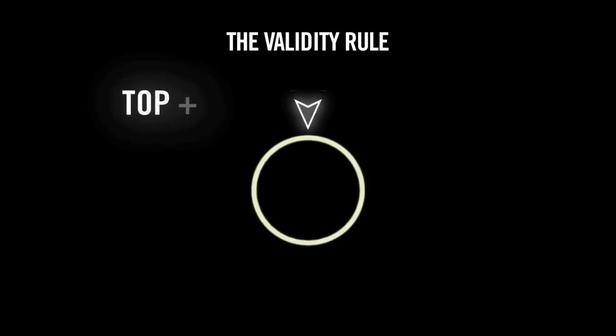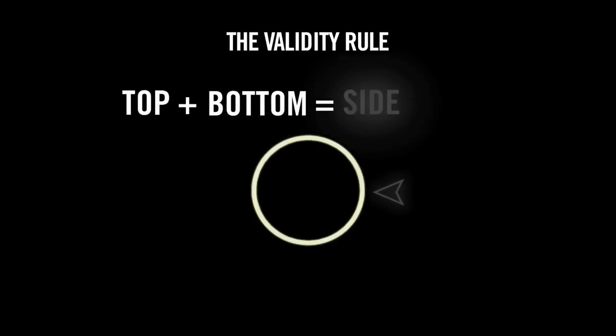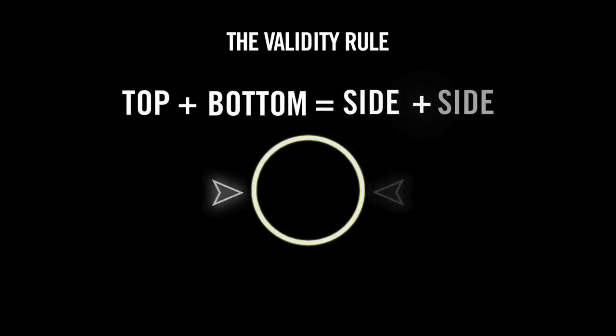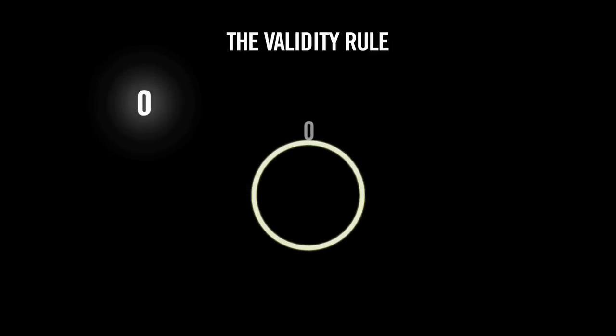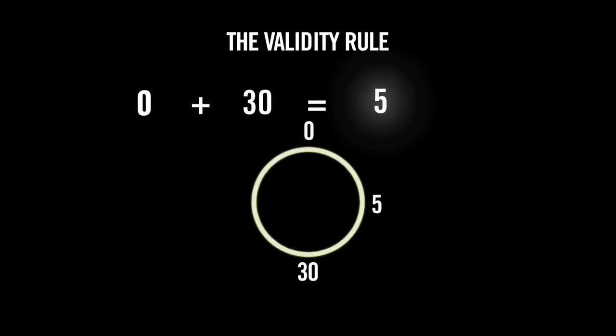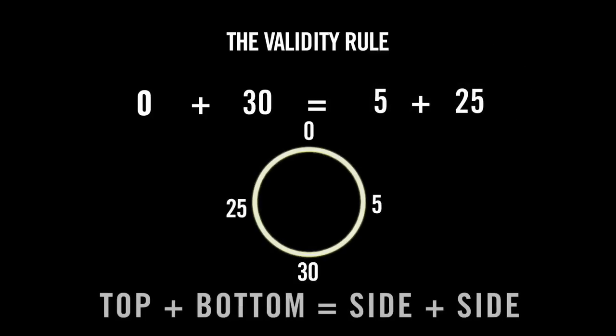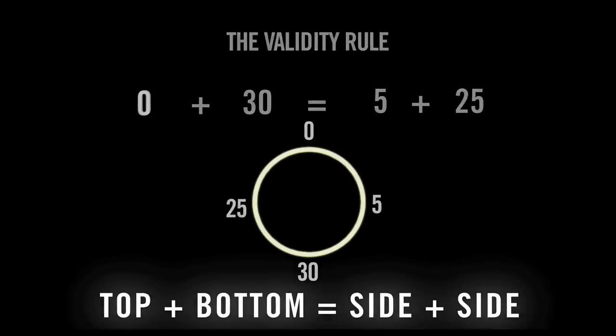The validity rule states that when we rotate the shafts, the value we acquire at the top plus the value at the bottom must equal the sum of the value at 3 o'clock and the value at 9 o'clock. So we had zero at 12 o'clock and 30 at 6 o'clock. We had five at 3 o'clock and 25 at 9 o'clock. So top plus bottom must equal side plus side.